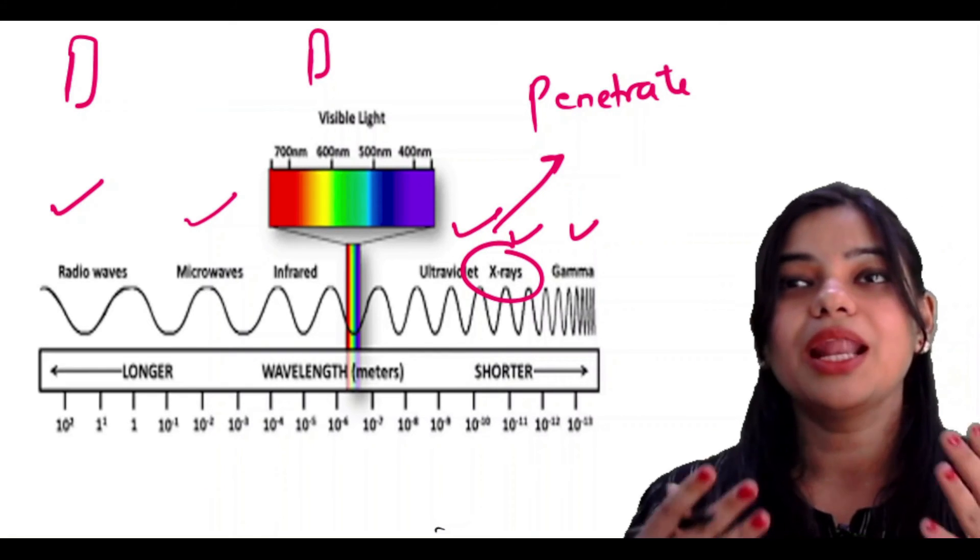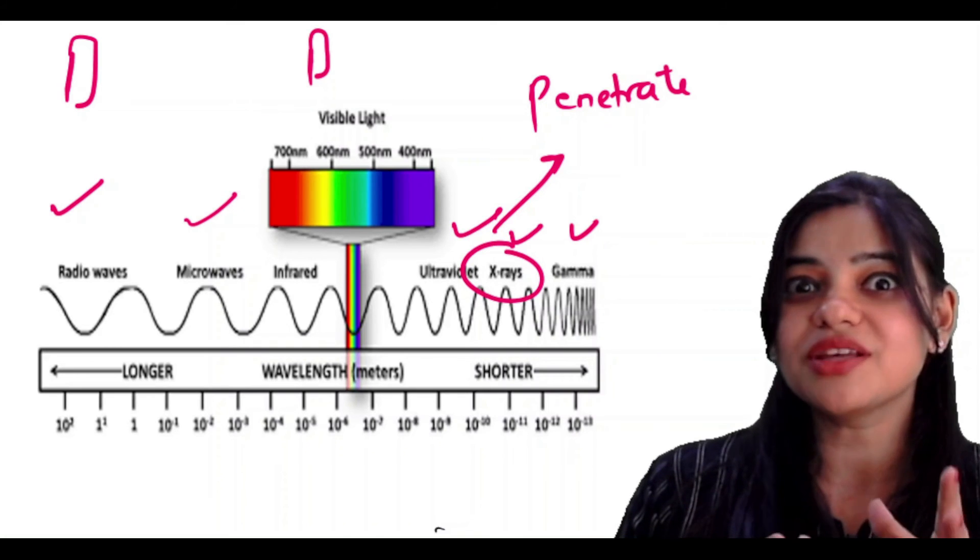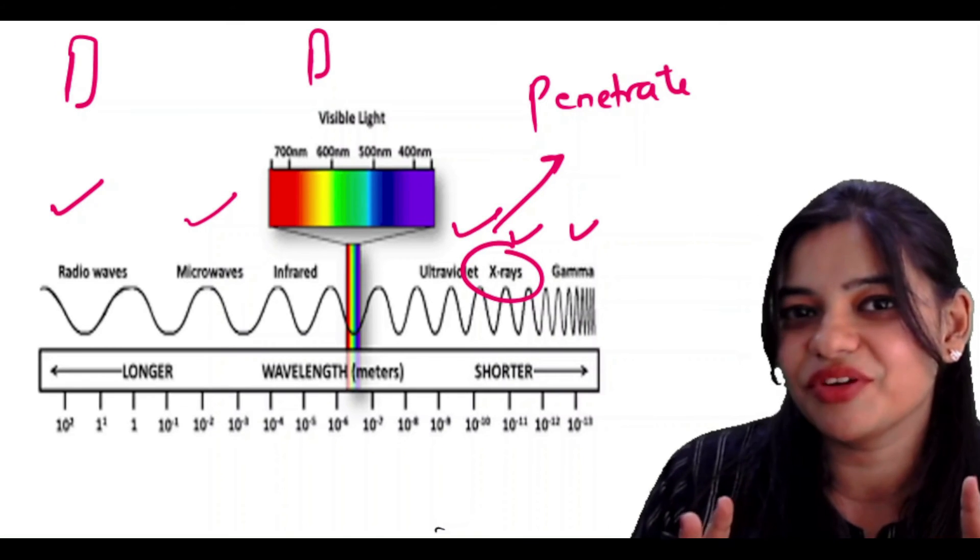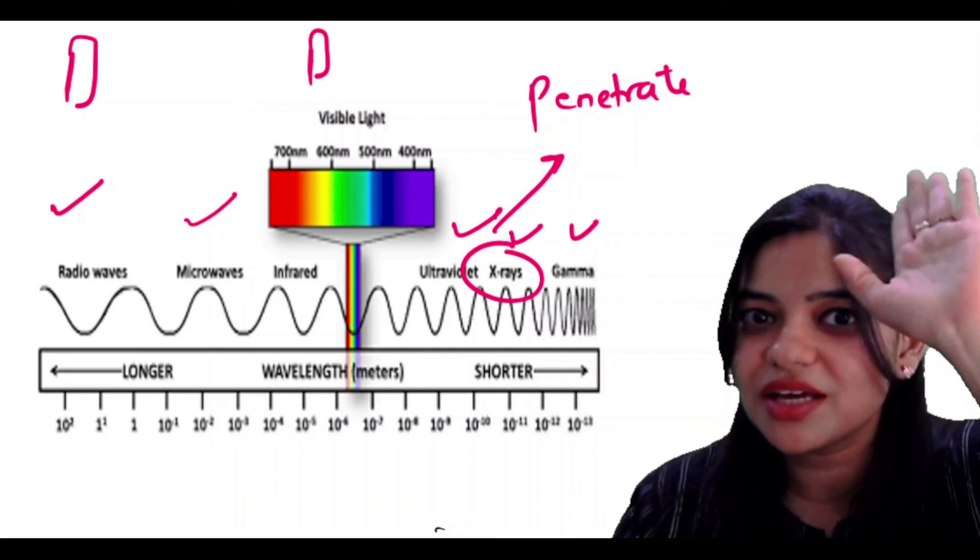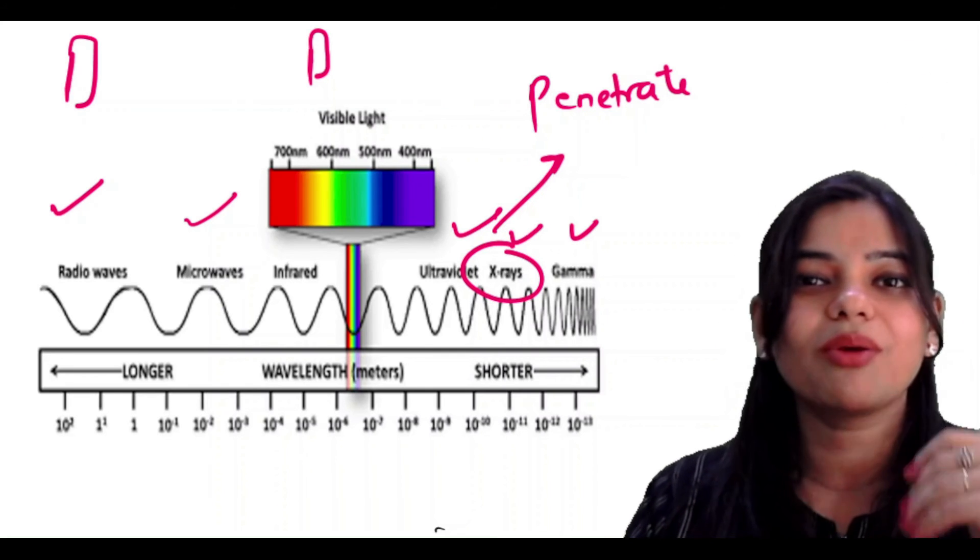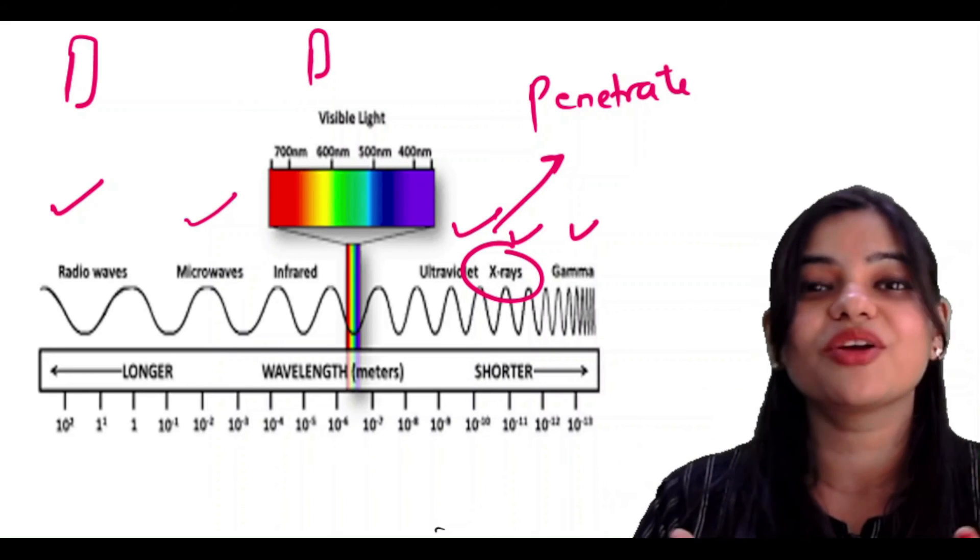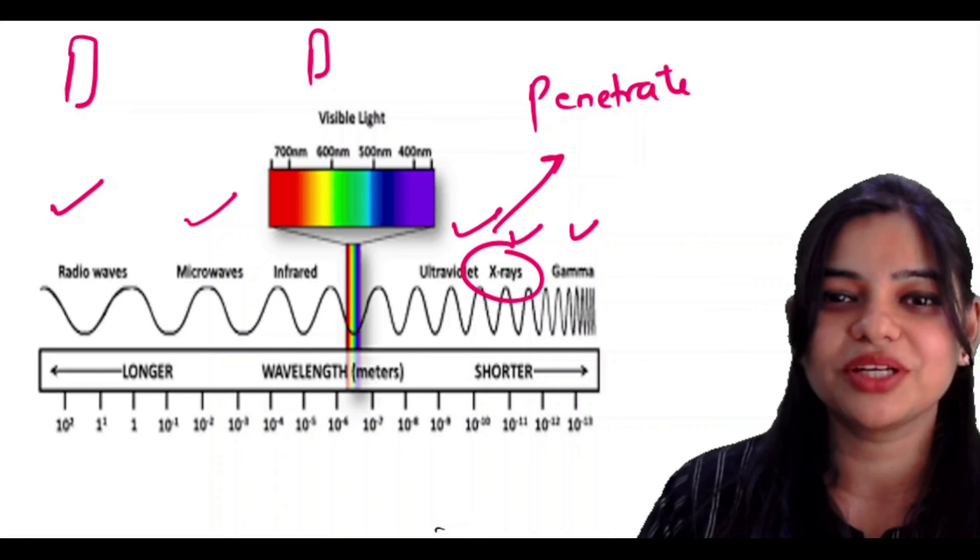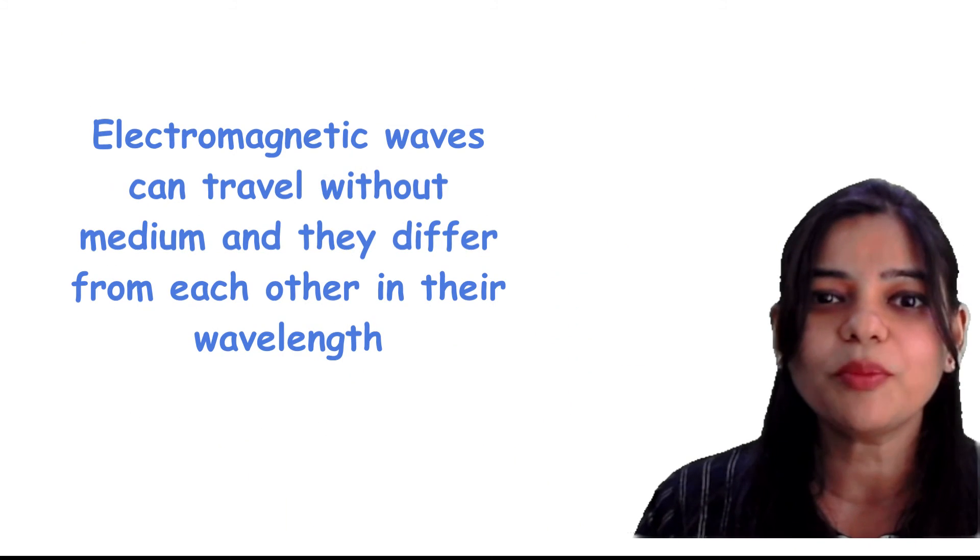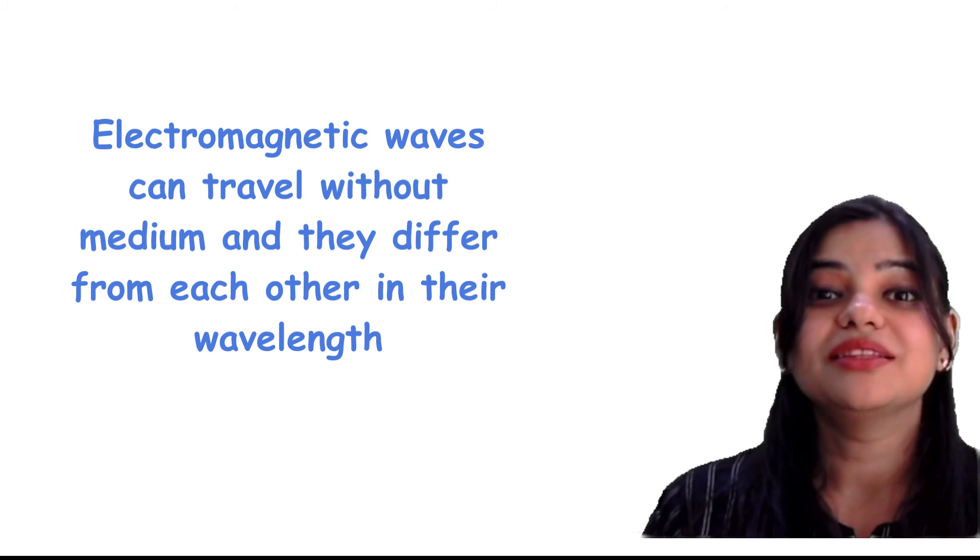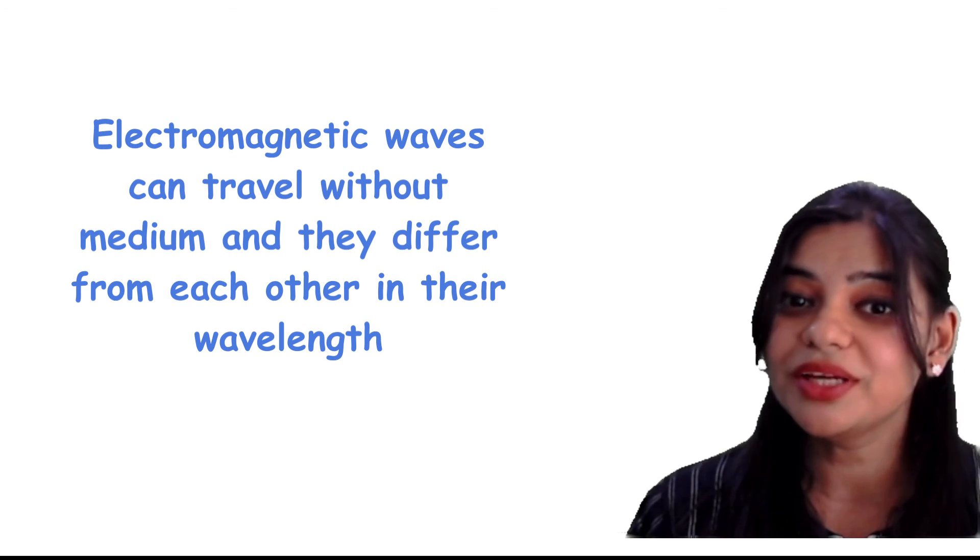Sound waves are not electromagnetic waves. For example, sound requires any medium to pass, but electromagnetic waves can pass directly. They do not require any medium to pass. So electromagnetic waves can travel without any medium. No medium is required.